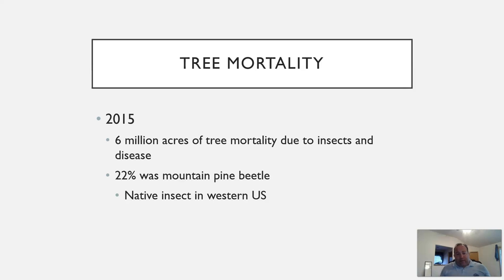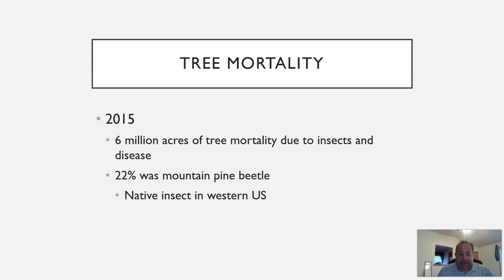Looking at tree mortality specifically, in 2015 there were 6 million acres of tree mortality due to insects and disease, and 20 percent of that — one fifth — was from mountain pine beetle. Mountain pine beetle, going back to what we talked about with pests, is a natural pest. It's something that should be around in the western US, but it's usually kept in low numbers because the cold winters kill off the beetles.